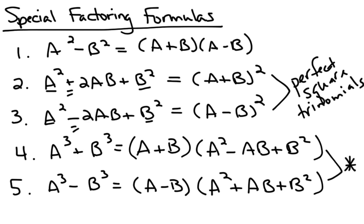The last two special formulas are the sum and difference of cubes. You may or may not have run across that in your honors class — it depends on who you had — but it will come back in my class. For a cubed plus b cubed, first take the cube root of each term, then write it in the form a plus b, a squared minus ab plus b squared. And if it's the difference of two cubes, find the cube root of each term and write a minus b, a squared plus ab plus b squared.